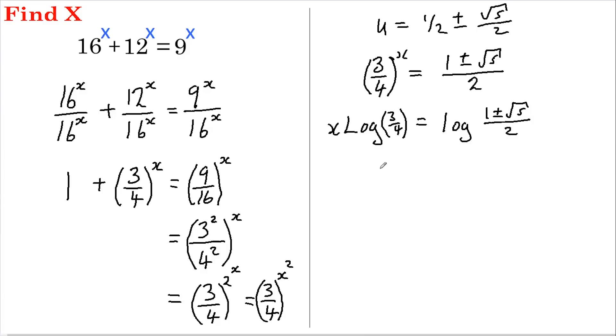So now we just have to divide both sides by log of 3 quarters, and we get x equals the log of 1 plus root 5 over 2, all divided by the log of 3 quarters.